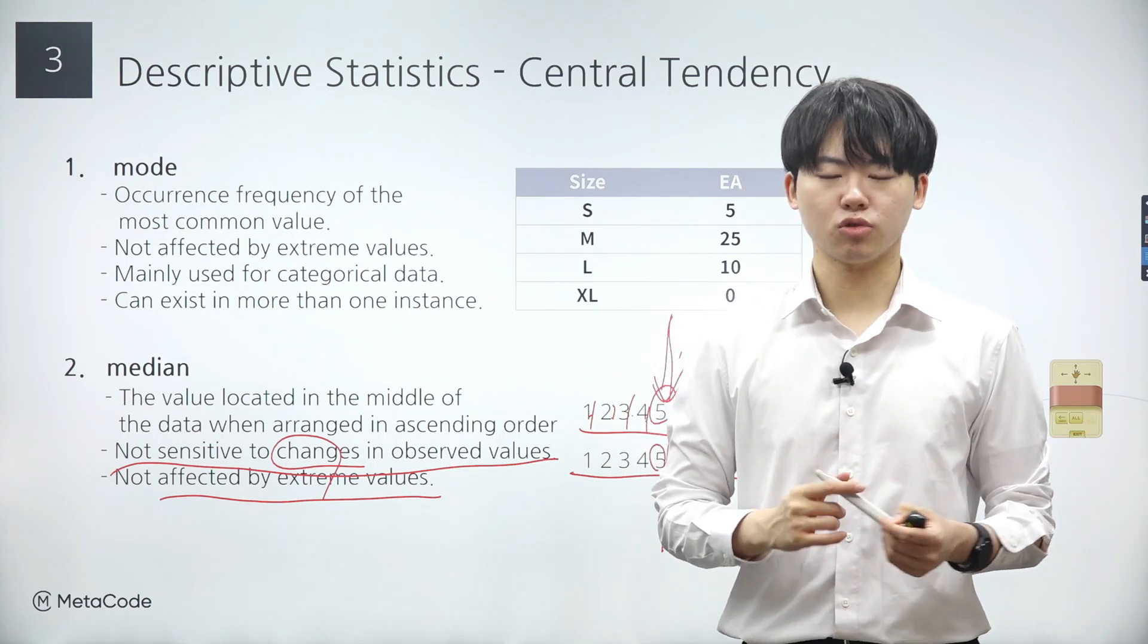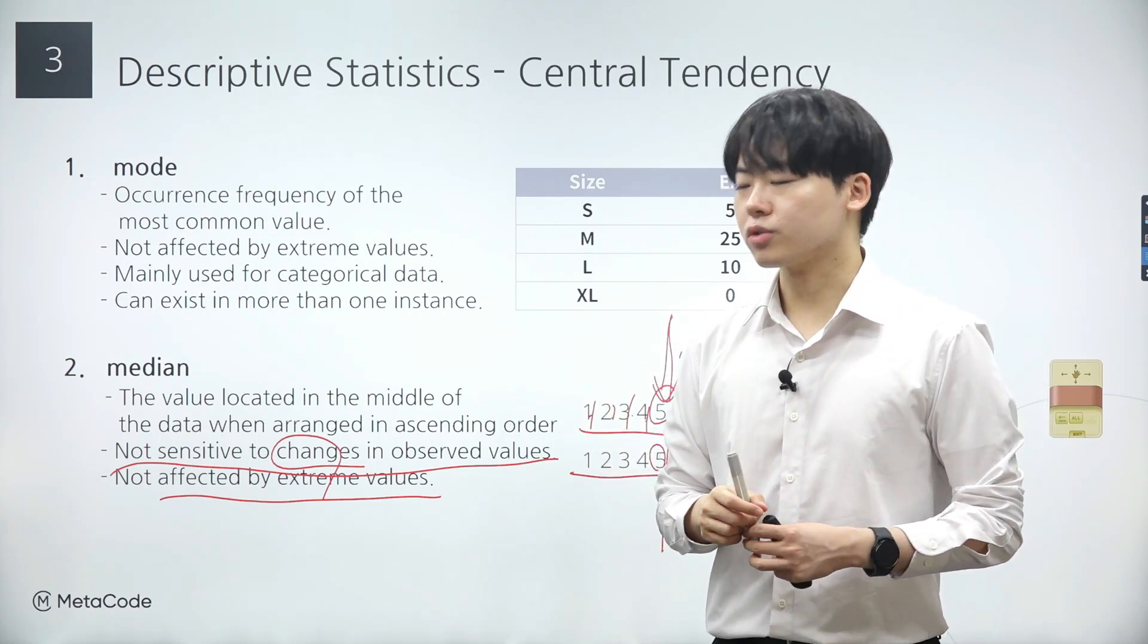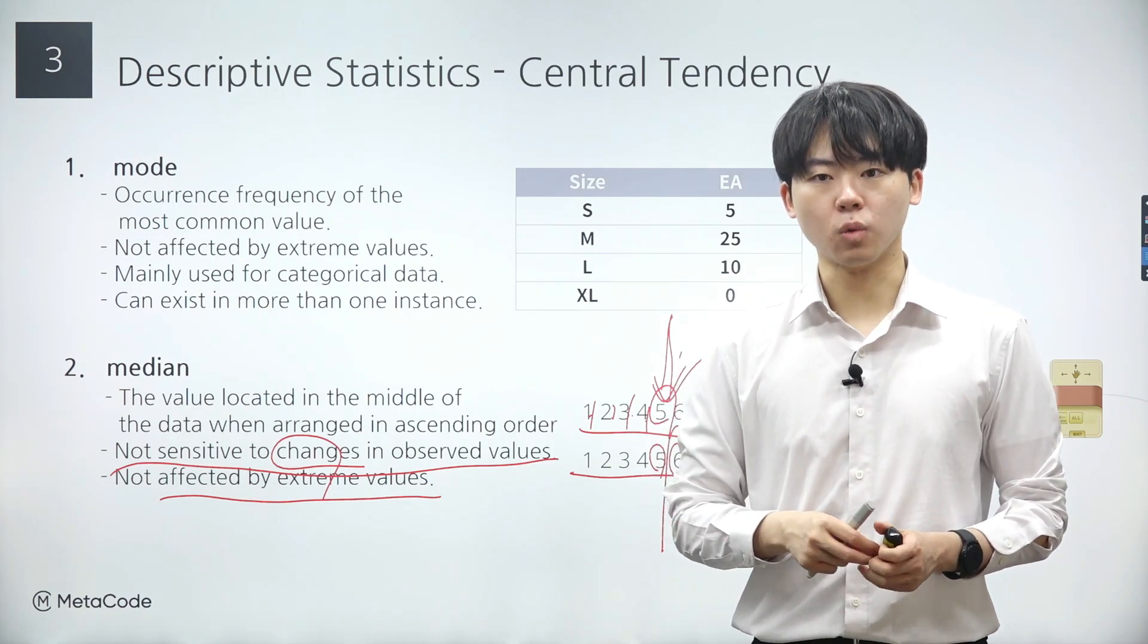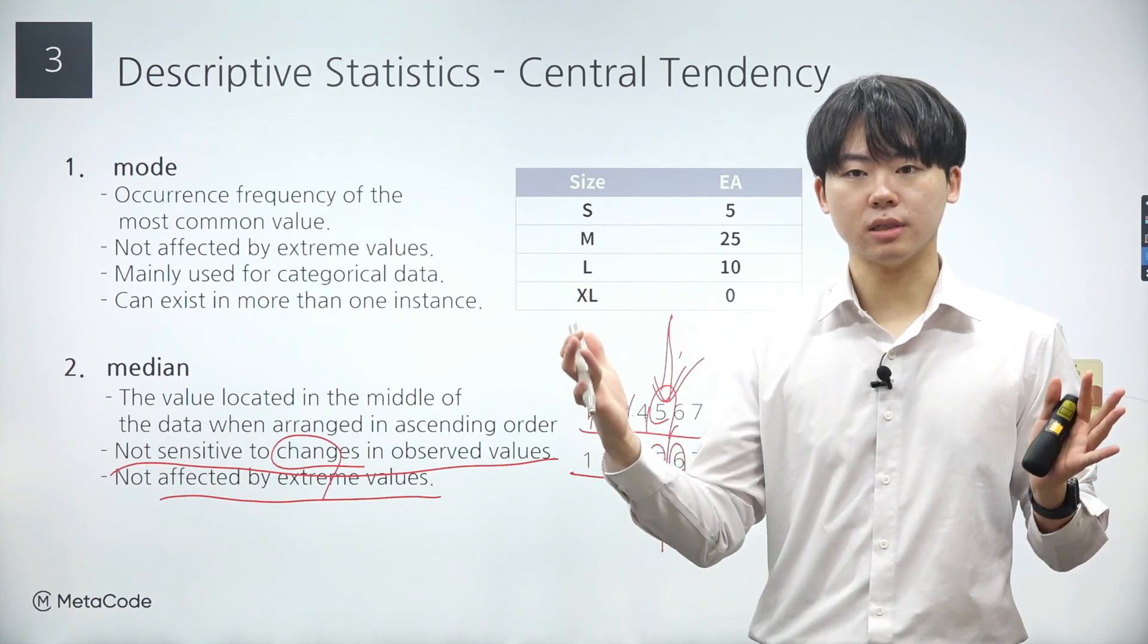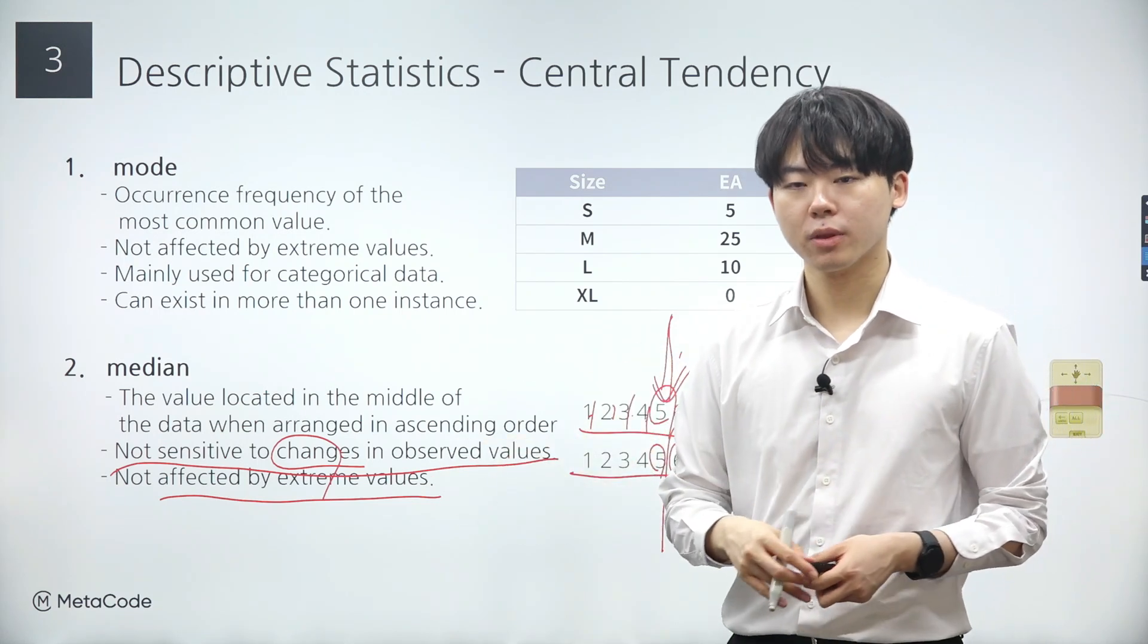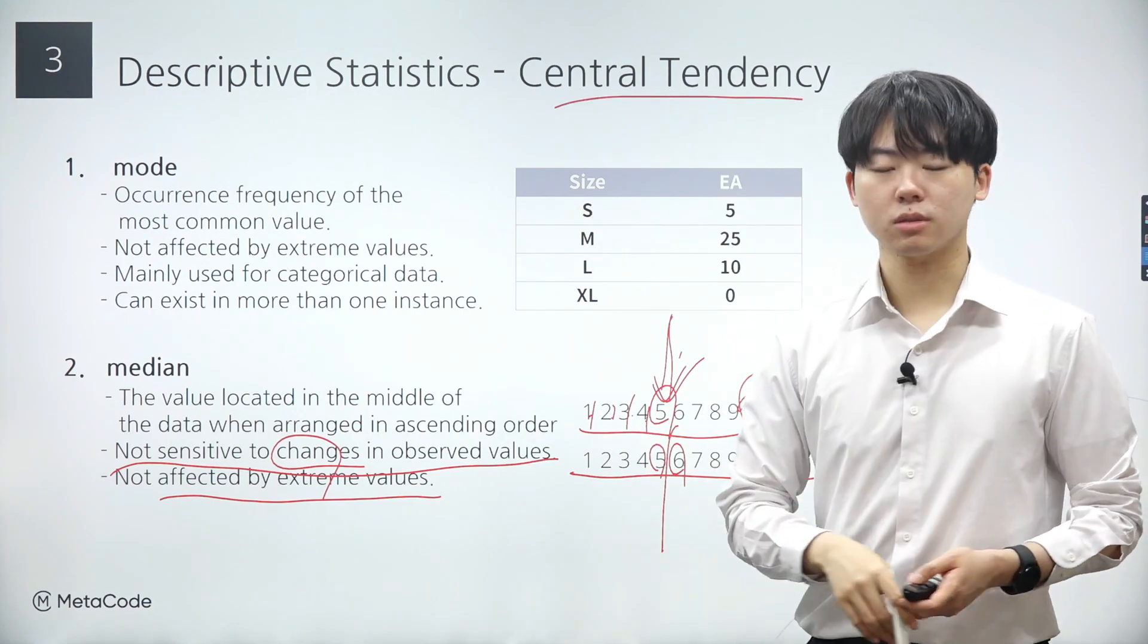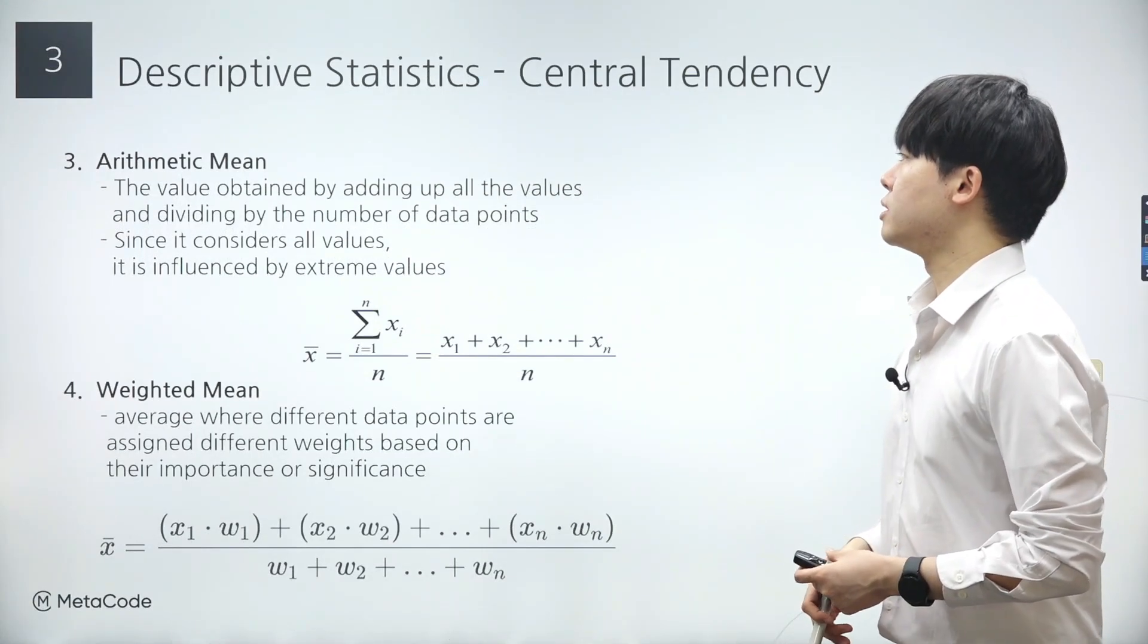The median is a descriptive statistic used frequently in both categorical and quantitative data. I also use the median quite often at work as a data scientist. For instance, when faced with extreme values within a data set and seeking a statistic that best represents its central tendency, I use the median. The median serves as an excellent measure of central tendency, particularly adept at handling data sets with extreme values.